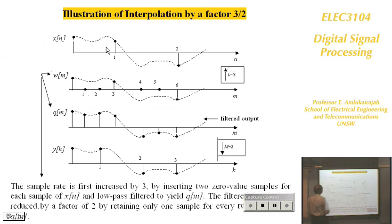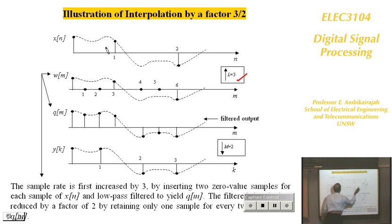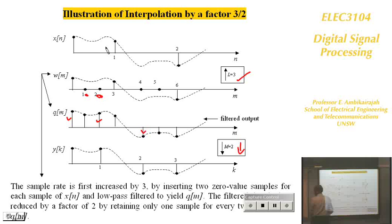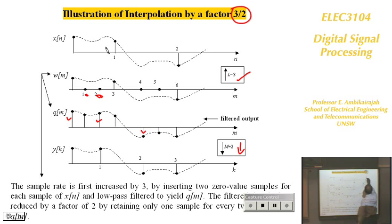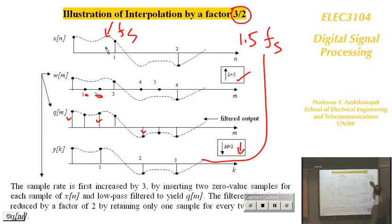Here is an illustration of non-integer sampling: signal is interpolated by 3 (2 zeros inserted), then filtered, then downsampled by 2. The non-integer factor is 3/2 = 1.5, so the output sampling frequency is 1.5 times Fs.